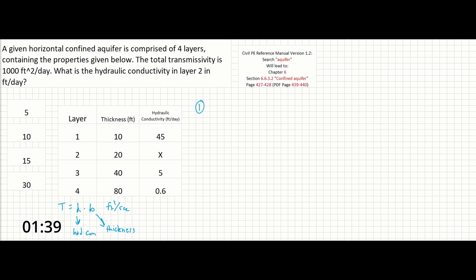Step one is to solve for the transmissivity of each individual layer. So we have a 10 foot thickness times 45 feet per day and that will give us 450 feet squared per day. Layer 2 is our unknown, so we have 20 feet times x and we don't have the known yet.